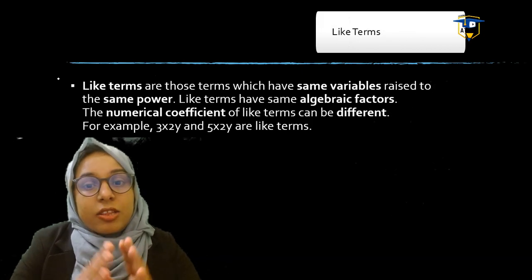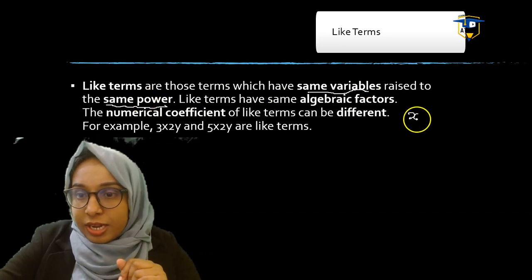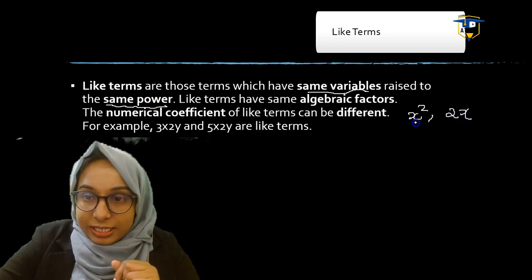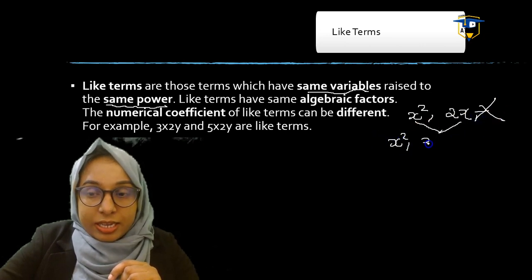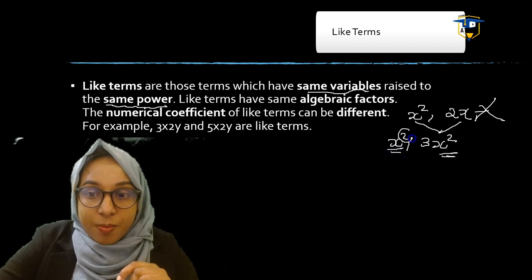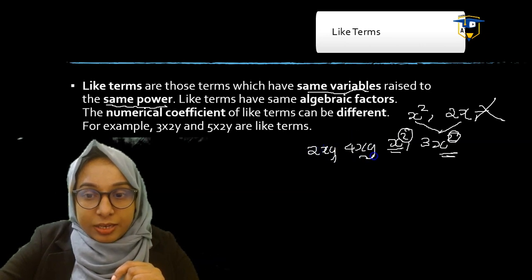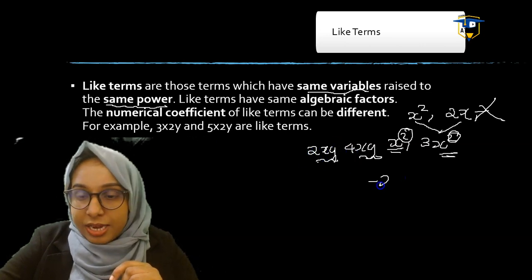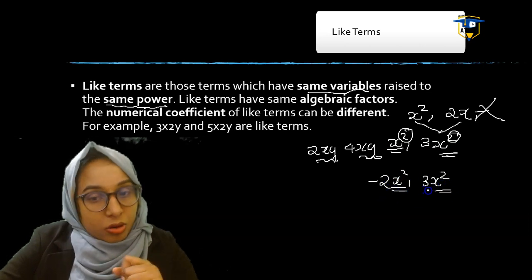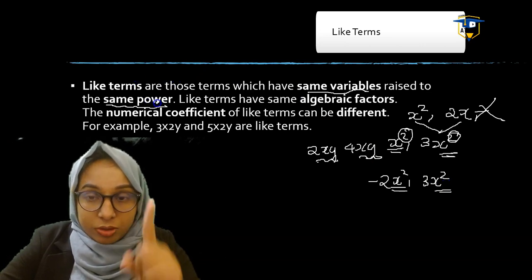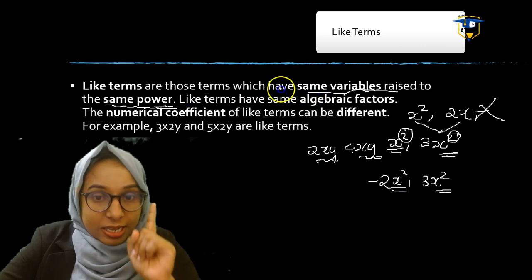Like terms are those terms which have the same variable raised to the same power — this is very important. For example, x squared and 2x have the same variable x but different powers, so they are not like terms. But x squared and 3x squared have the same variable and same power, so they are like terms. Similarly, 2xy and 4xy are like terms, and minus 2x squared and 3x squared are like terms.